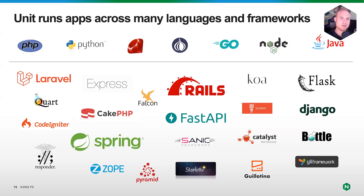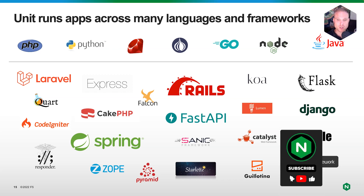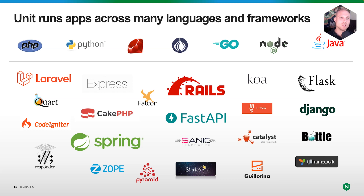So to wrap this up: if you run any of the languages or frameworks shown in this diagram, you are absolutely invited to try out NGINX Unit with your favorite framework and start to modernize and simplify your application stack. In the next chapter, we will learn how to install NGINX Unit and get our hands dirty. I'll see you in Chapter 2 — have a good one!